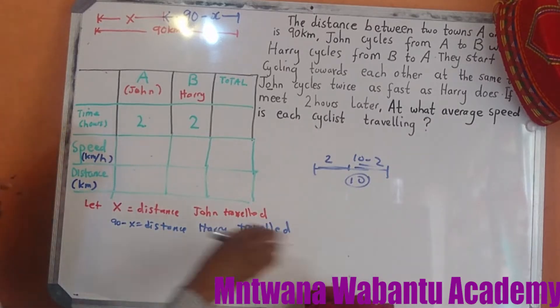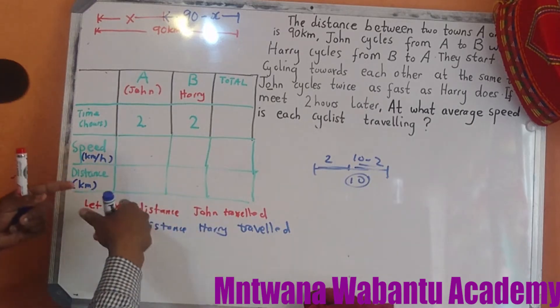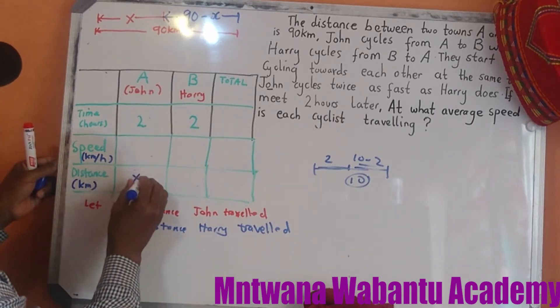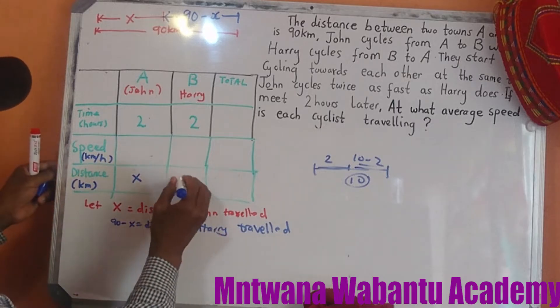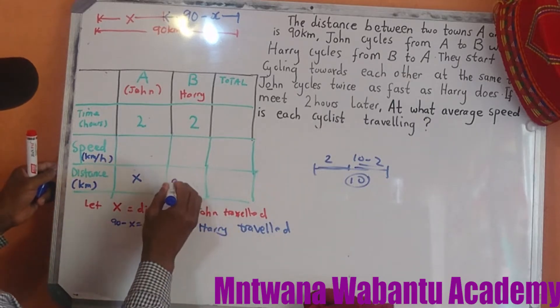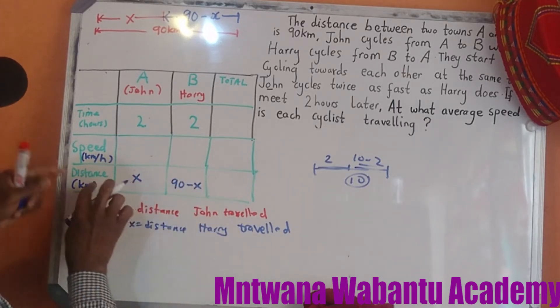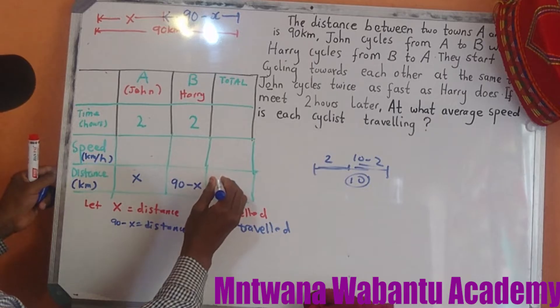Now we can fill in the table. John's distance is x, Harry's distance is 90 minus x, and the total distance is 90 kilometers.